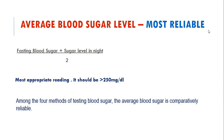Average blood sugar level is calculated by taking the morning fasting blood sugar level 1 to 1.5 hours before you get up. If you rise at 7 a.m., take the fasting blood sugar at 5:30 a.m. Then take your blood sugar at bedtime, add the two readings, and divide by 2. This gives you the average blood sugar level reading, which is the most appropriate reading and should be less than 250 mg per deciliter.